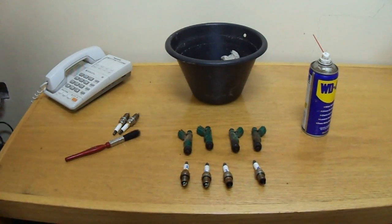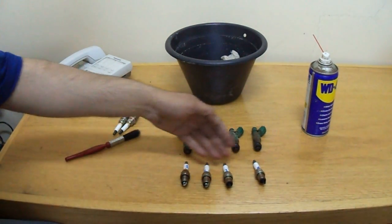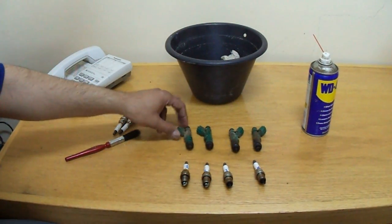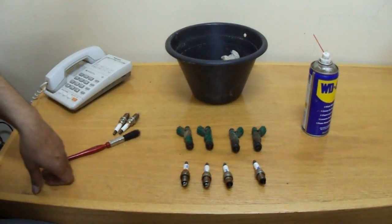Here are the components from the engine. These are the spark plugs: one, two, three, and four. Here are the fuel injectors: one, two, three, and four. These came from the engine.